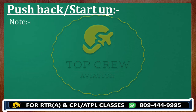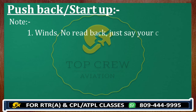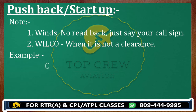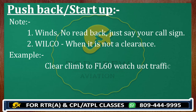Just for your information, whenever ATC is telling you Wilco, no need to read back — just say your call sign. Wilco means when it is not a clearance. Whenever it is not a clearance, we can use Wilco; otherwise we cannot use Wilco. For example, when you can use Wilco: clear climb to flight level 6-0, watch out traffic 5 miles 3 o'clock — then you can use Wilco.